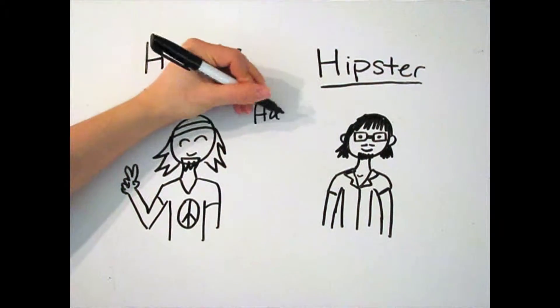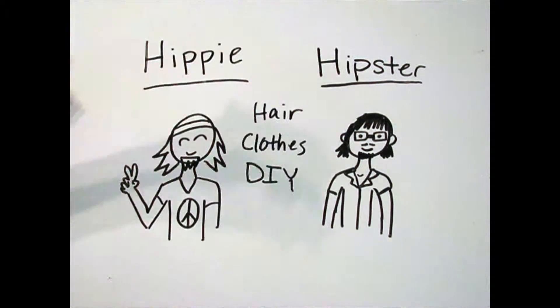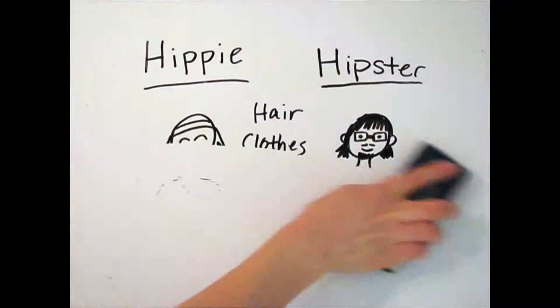Common characteristics can include unkempt hair and offbeat clothing. They like to make their own stuff, non-conformist political views, and they tend to dwell in places like Portland, Oregon.